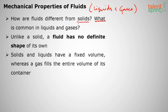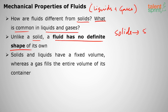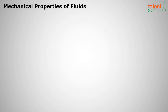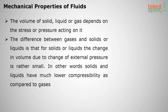How are fluids different from solids, and what is common in liquids and gases? Unlike a solid, a fluid has no definite shape — solids have a shape but fluids don't. Solids and liquids have a fixed volume, whereas gas fills the entire volume of its container.